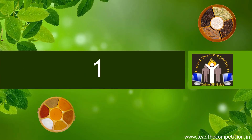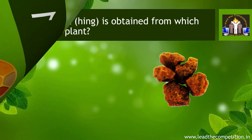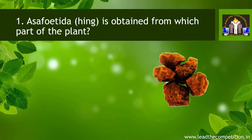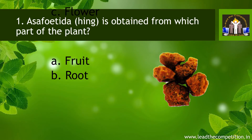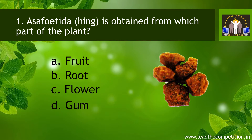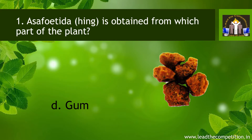Question number 1. Asafoetida is obtained from which part of the plant? A. Fruit. B. Root. C. Flower. D. Gum. The answer is D. Gum.